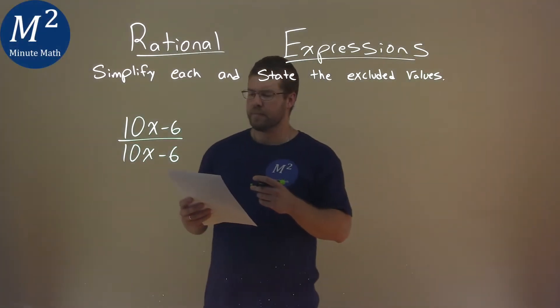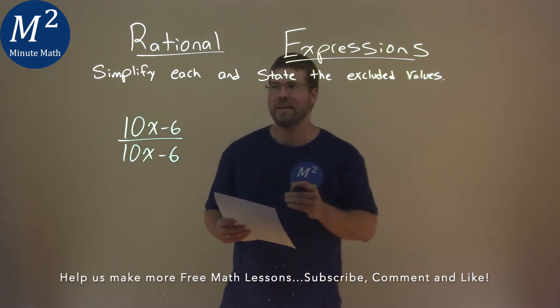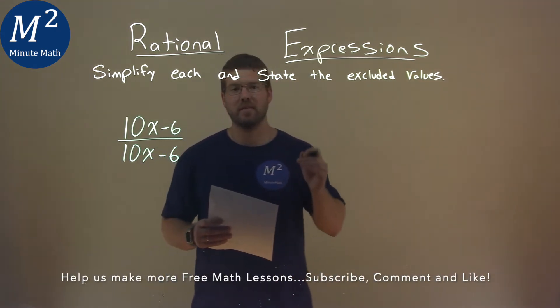We're given this problem right here, 10x minus 6 over 10x minus 6, and we need to simplify this and state the excluded values.